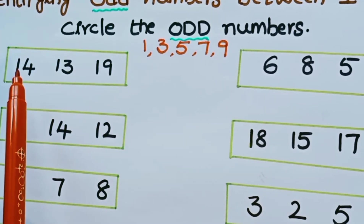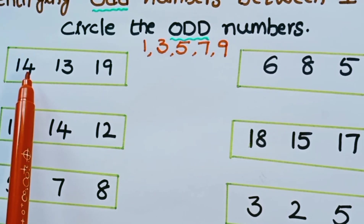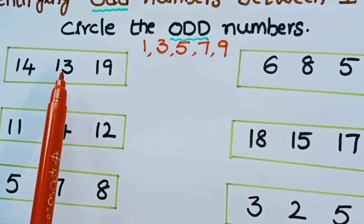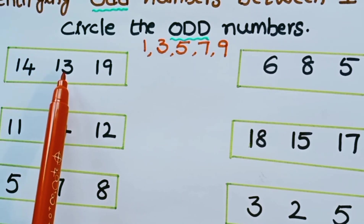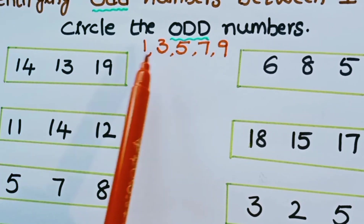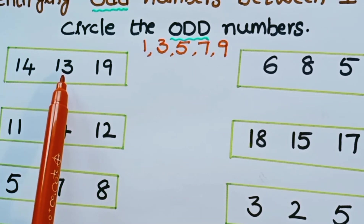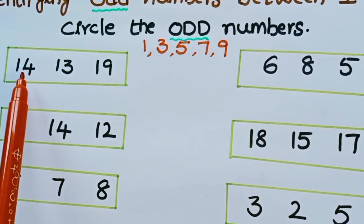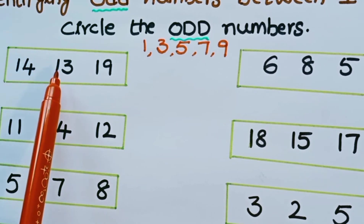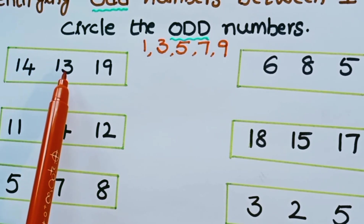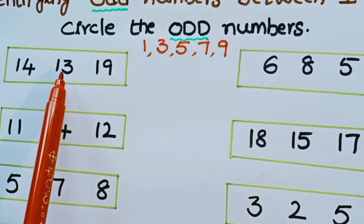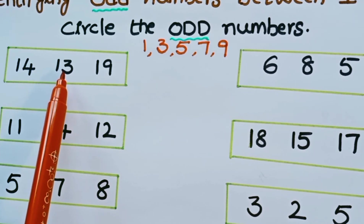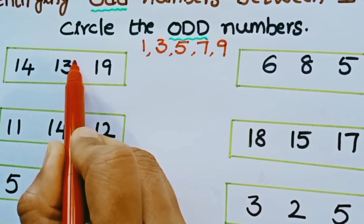When there are two-digit numbers, you look at the ending digit. If it ends with an odd number, then it is an odd number. Is 14 even or odd? It is an even number. Is 13 odd or even? It is an odd number, so we circle 13.